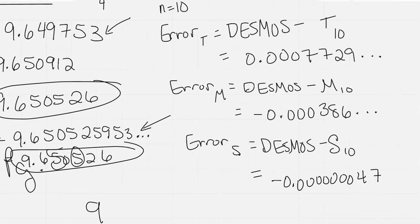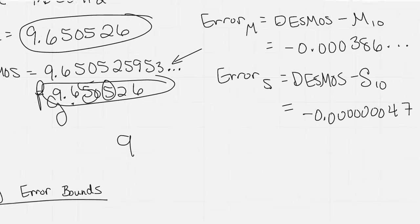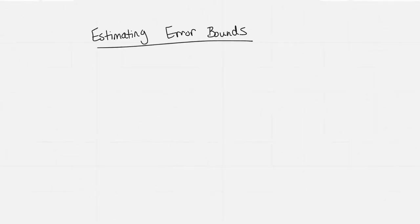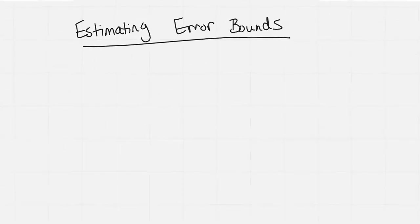Then we looked at the errors that came about when we compared it to what we get in our calculator. So we could actually calculate the actual error after we've gotten the approximation. But what about just estimating an error bound? We have formulas for that.